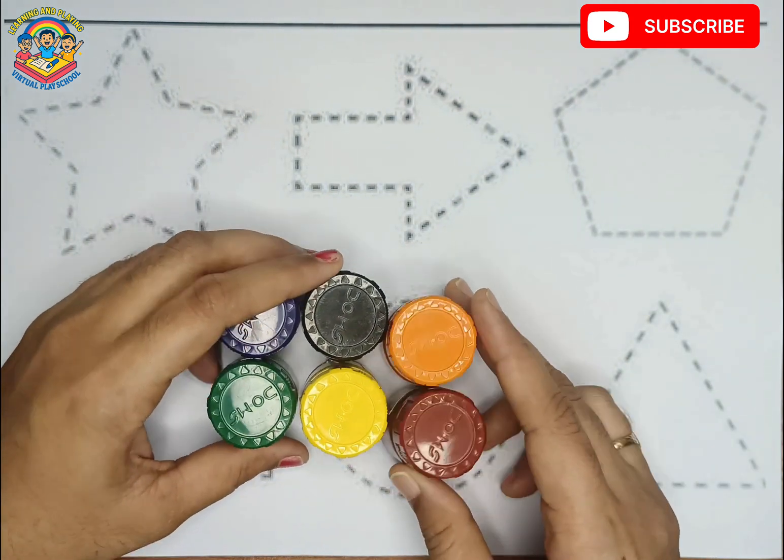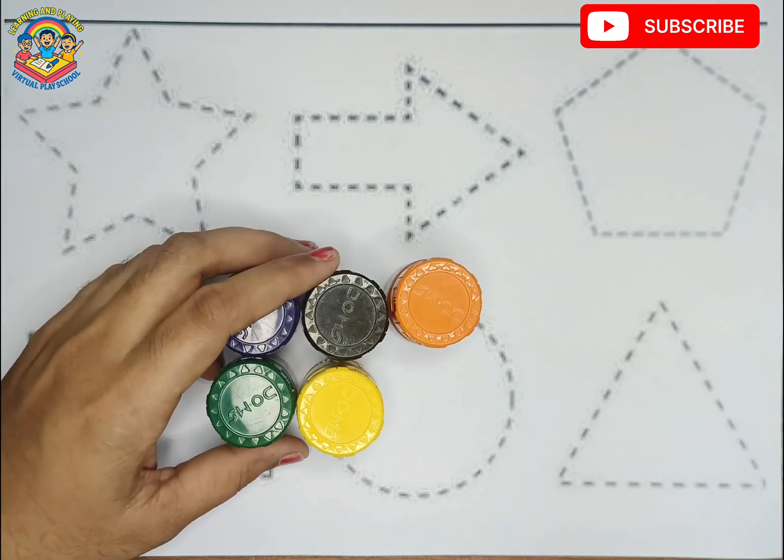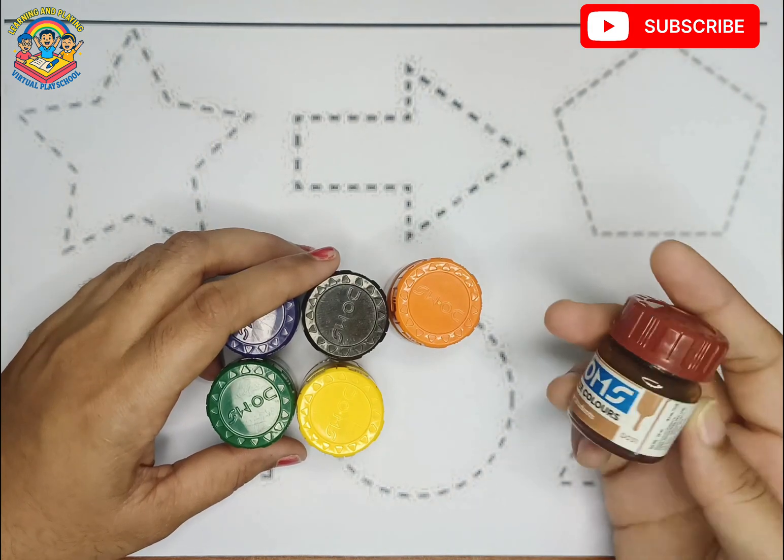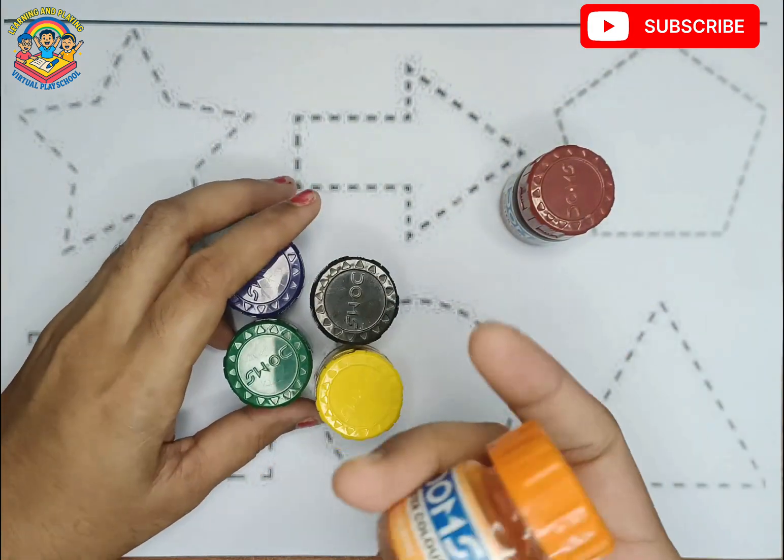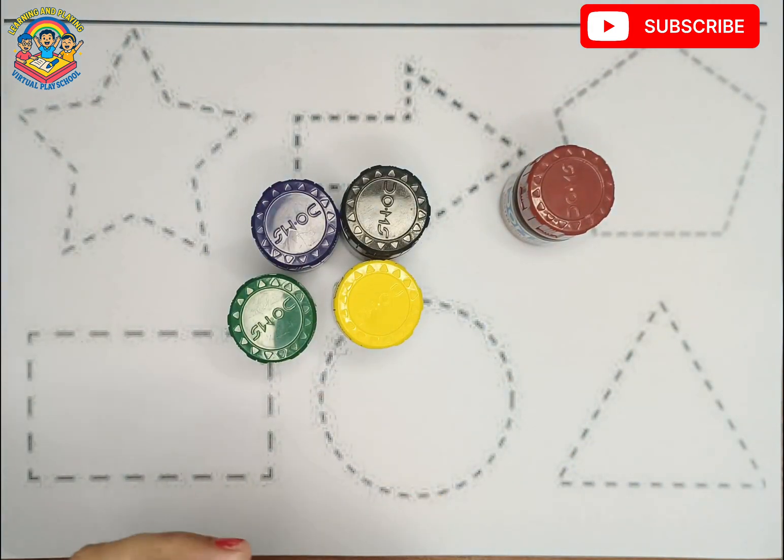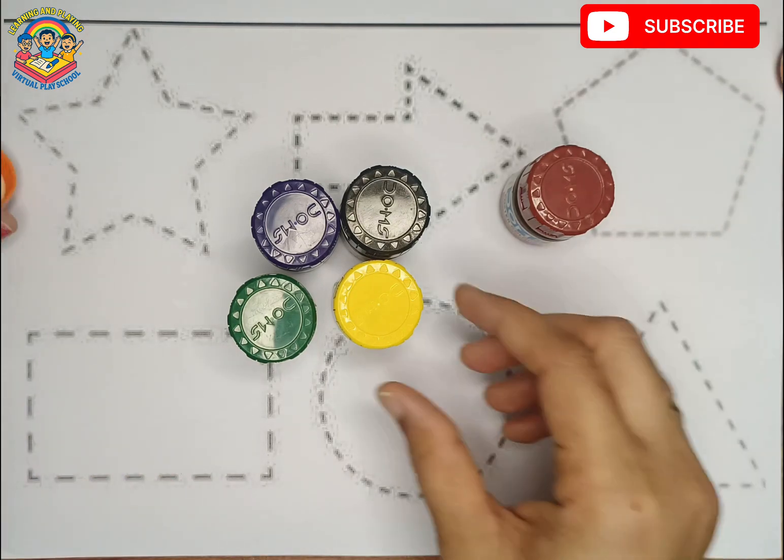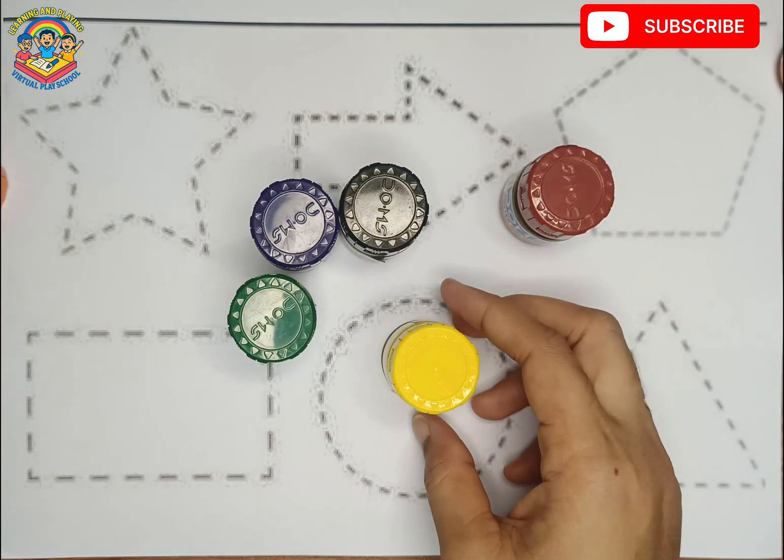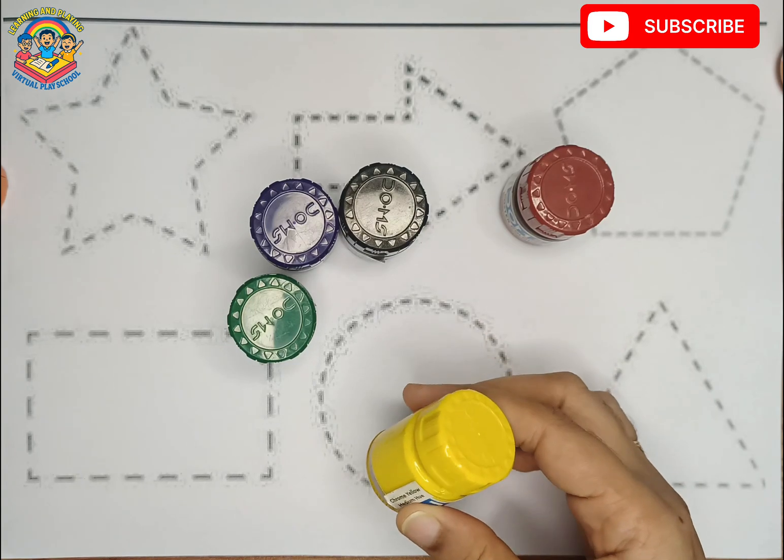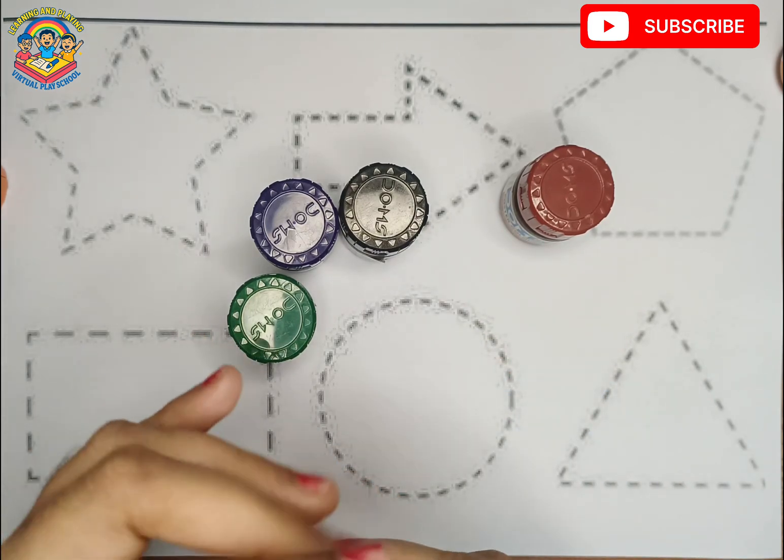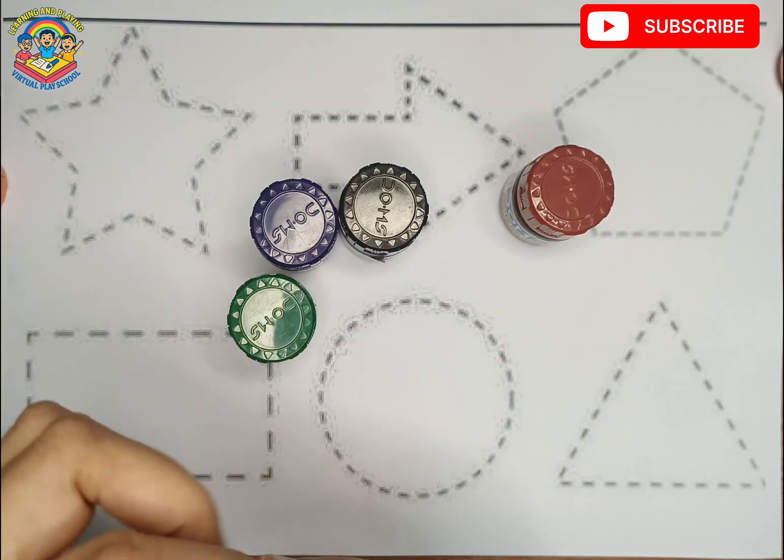Let's use these colors. Orange color. Which color kids? Orange color. And yellow color. Which color kids? Yellow color.